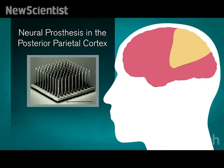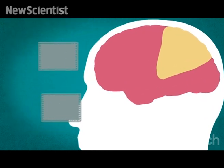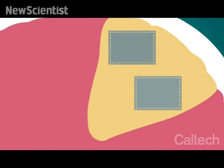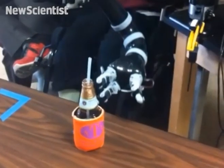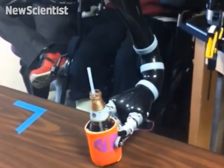First, they implanted a neuroprosthesis in the PPC of a paralyzed patient. Then, they asked him to visualize specific actions. His neurons fired, sending instructions to the robotic arm, using only his thoughts.